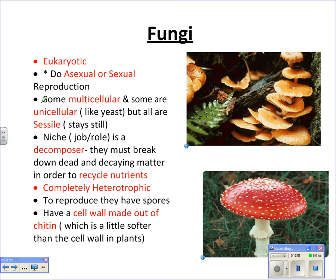Fungi are eukaryotic, can reproduce asexually or sexually, and some are multicellular while some are unicellular like yeast, but all are sessile. Fungi are decomposers — they break down dead organic matter to recycle nutrients, which is necessary for a self-sustaining ecosystem. They are completely heterotrophic and have a cell wall made out of chitin, which is a little softer than the cell wall in plants. So far, bacteria, plants, and fungi all have cell walls.